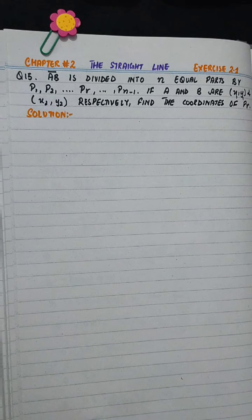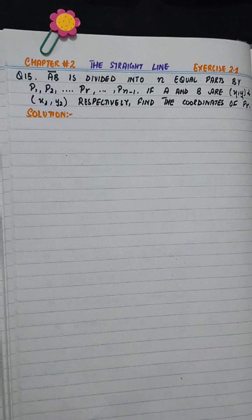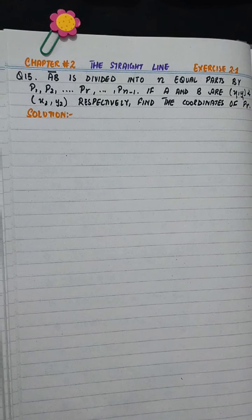AB is divided into n equal parts by P1, P2, dot dot dot PR, dot dot dot PN-1. If A and B are X1, Y1 and X2, Y2 respectively, find the coordinates of PR.